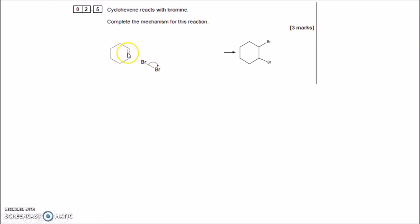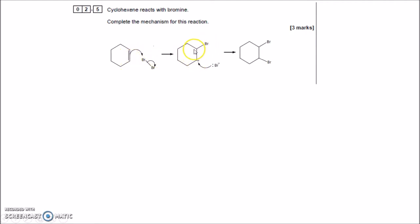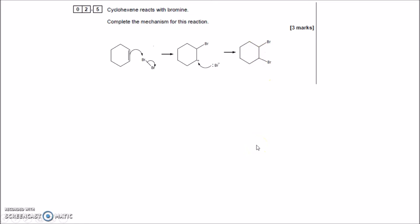Cyclohexene reacts with bromine — complete the mechanism. Electrons come from the double bond, just as in electrophilic addition with HBr. The electrons go from the double bond towards the Br, which joins onto one of the two carbons. The other carbon becomes positively charged. The Br⁻ — formed when the bond broke and electrons went onto the Br — then attacks that positive charge and joins on. That's your electrophilic addition mechanism of Br₂.